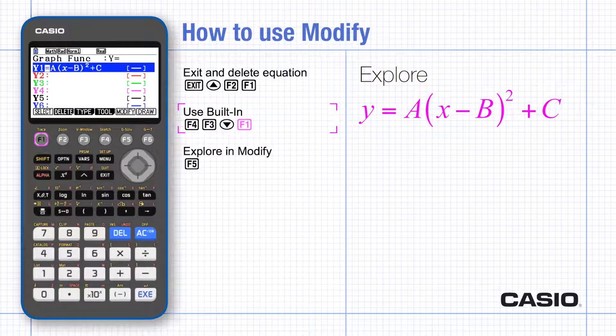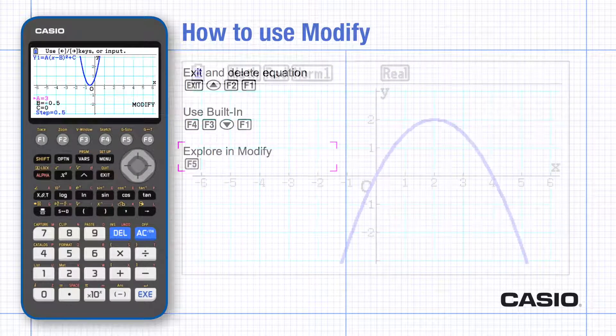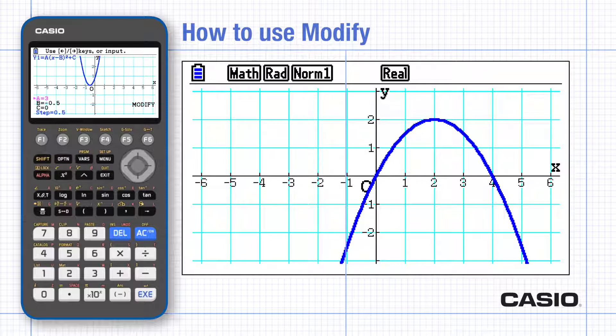Go to modify and explore the effect of changing the values of a and b and c. Here's a challenge for you. Can you find the values of a, b, and c which give you this graph?